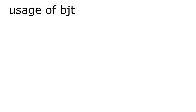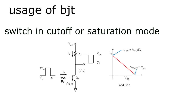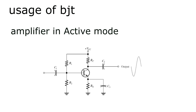Now we're going to talk about the usage of the transistor. It can work as a switch — we can use it as a controller in the circuit by making it operate in cutoff or saturation mode only. The second usage of the transistor is amplification — we can use the BJT as an amplifier by making it operate in active mode only.